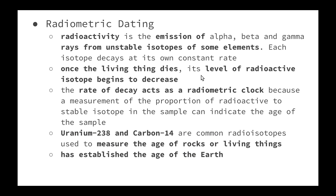We also have the technology of radiometric dating. Radioactivity is the emission of alpha, beta, or gamma rays from unstable isotopes of some elements on the periodic table. Each isotope decays at its own constant rate. As rocks or living matter form, radioisotopes are incorporated into them in proportion to the isotope's abundance in the atmosphere. Once a living organism dies, its level of radioactive isotope begins to decrease since there is no further exchange of matter with the environment. Uranium-238 is a common radioisotope used by geochemists to measure the age of rocks; it has a long half-life and decays into lead.